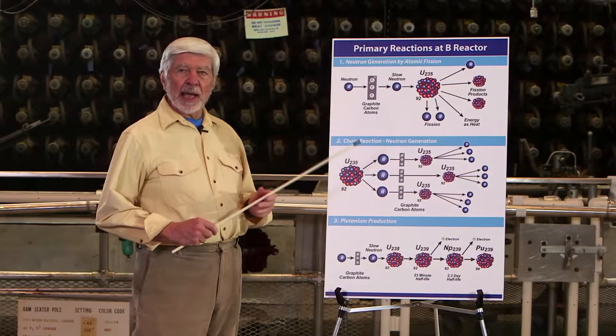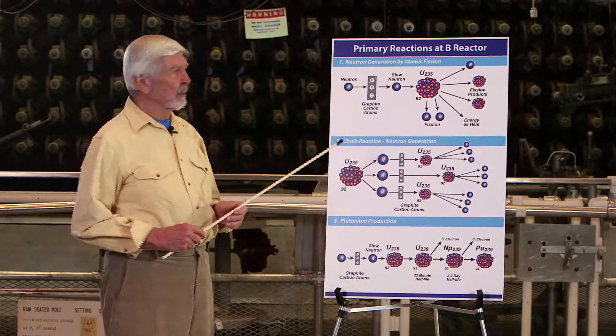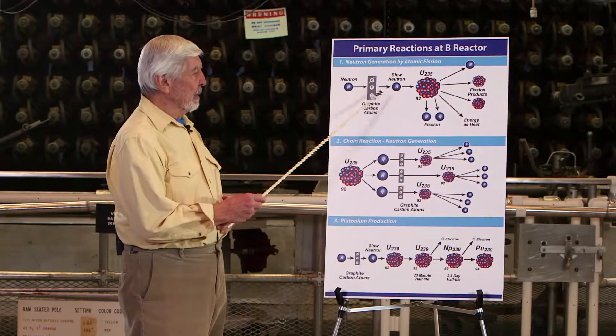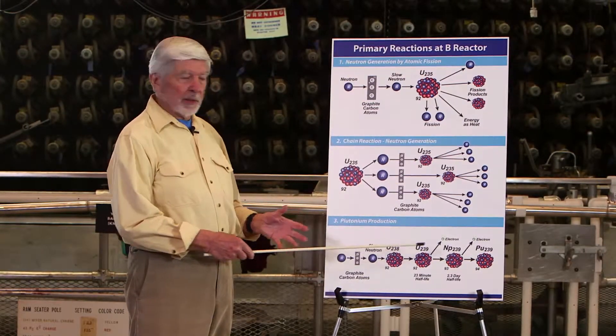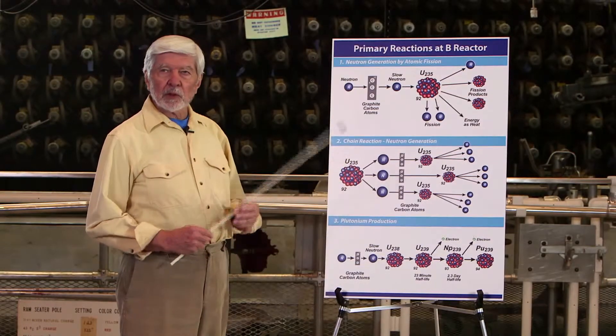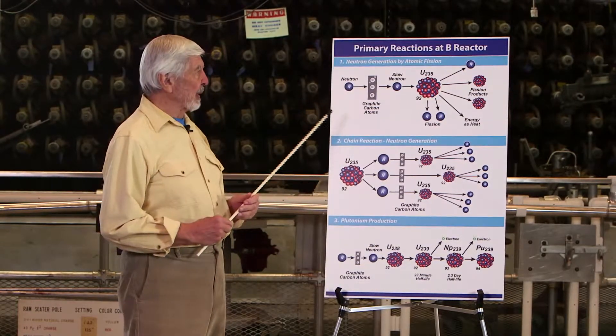There are three primary reactions that occur in this reactor: a fission reaction, a chain reaction, and a transmutation reaction that produces plutonium. We'll start with the fission reaction.